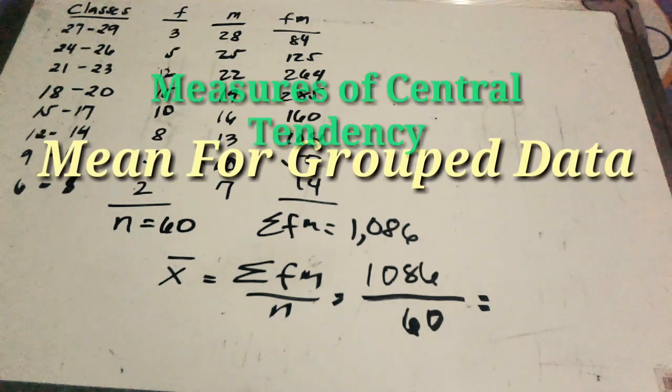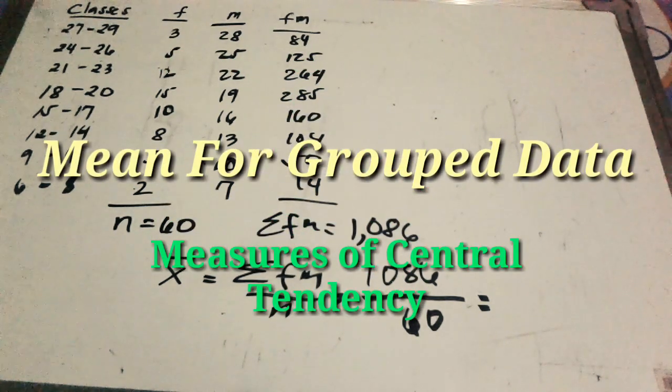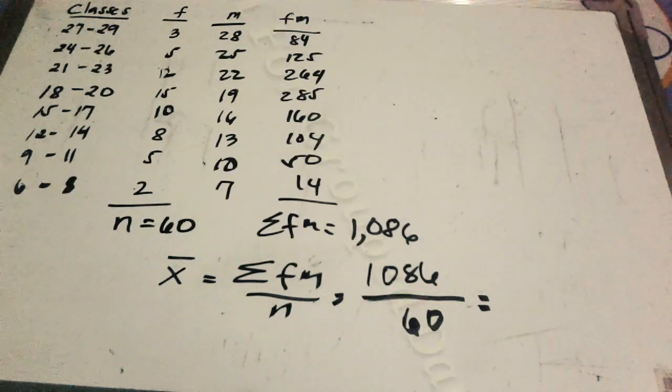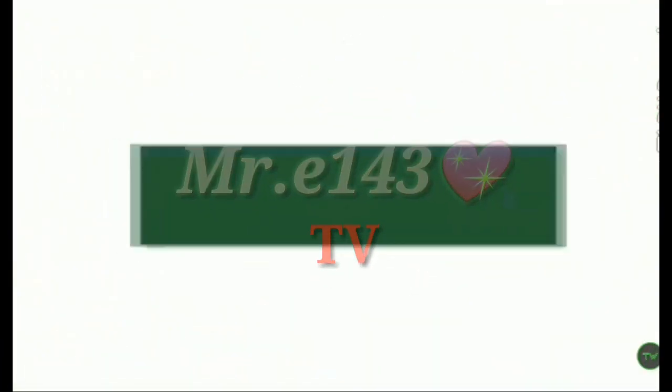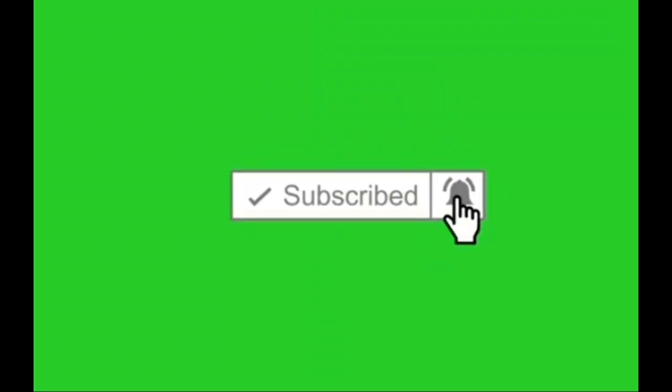1,086 divided by 60 is equal to... So what's up guys, for this video we're gonna cover the mean for grouped data and the measures of central tendency. So first, how do we find the mean for grouped data?